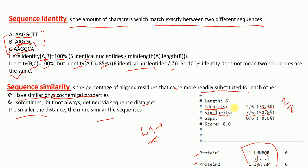In identity, we only look at the exactly matched characters in the sequence alignment. When it comes to similarity, we also look at similar characters in addition to the identical characters — meaning for example leucine and isoleucine, which are physically and chemically similar.